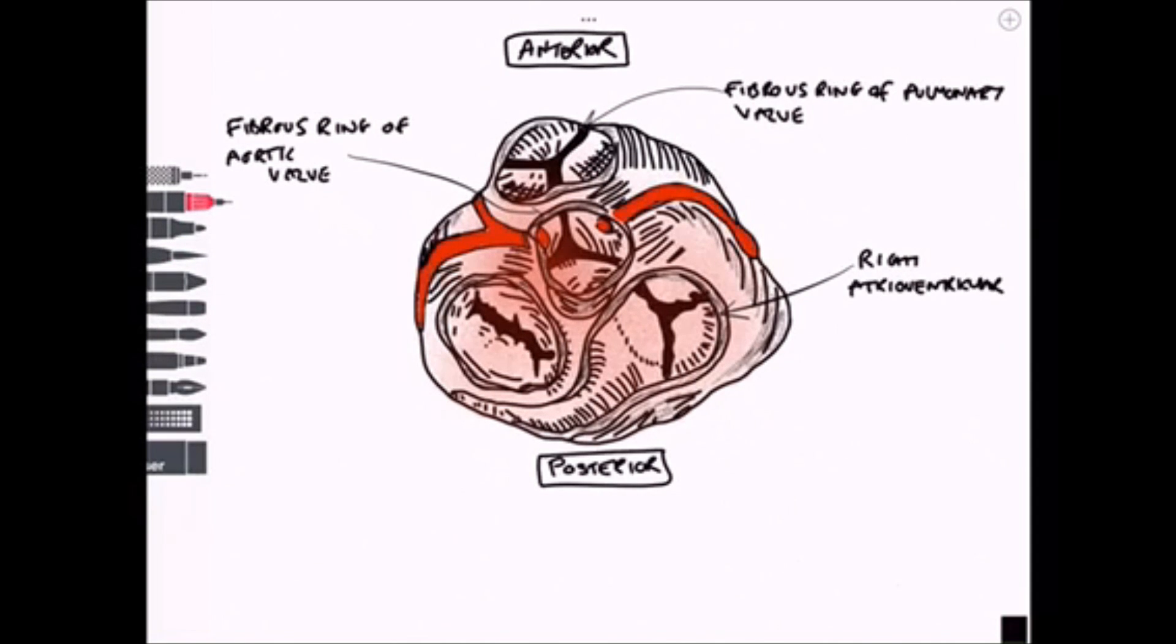The next one is the right atrioventricular ring so this is around the tricuspid valve so there's some connective tissue around there as well and we see some connective tissue around the left atrioventricular ring of the mitral valve which is the bicuspid valve.